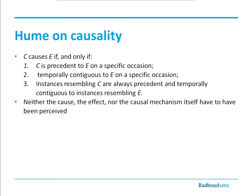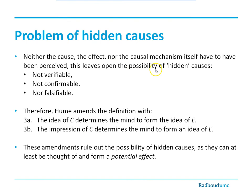Why is this a problem? When you think about it, there can be such a thing as completely hidden causes — we do not see the effect, and we do not see the causal mechanism. These are things occurring completely outside our observable universe. Such things are not verifiable, not confirmable, and not falsifiable. Therefore, according to the empiricist point of view, it is not knowledge — it may be common practice, but it is not knowledge.